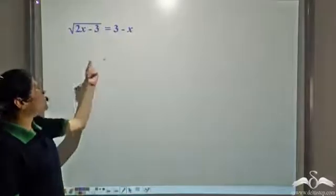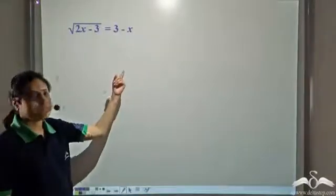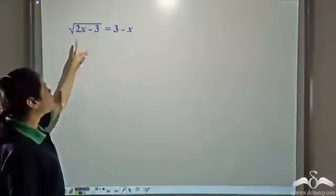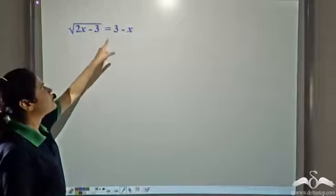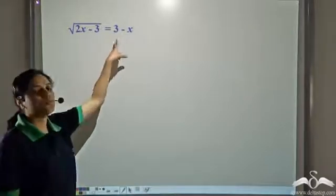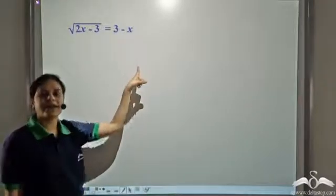Now we need to solve this equation: root over 2x minus 3 is equal to 3 minus x.